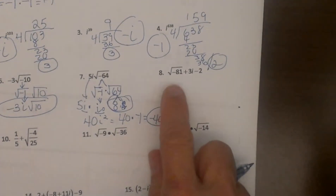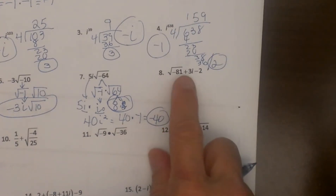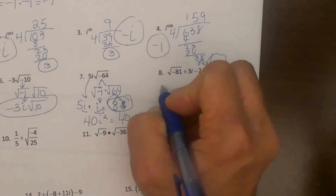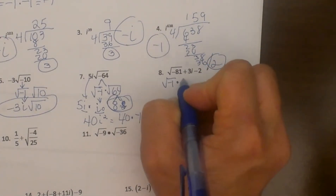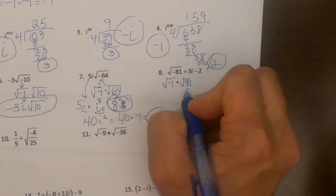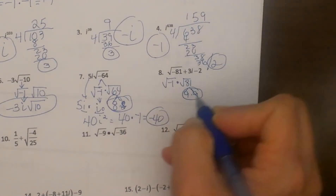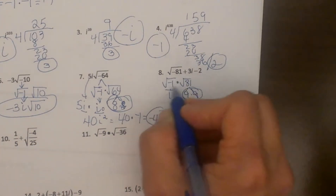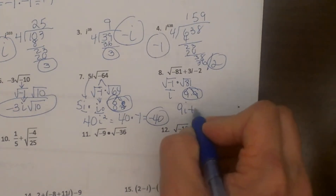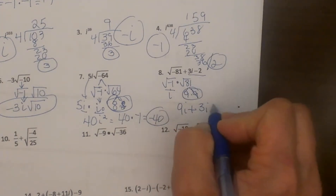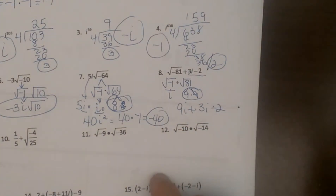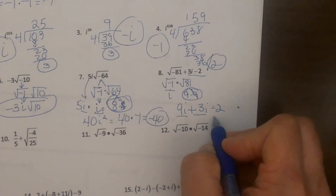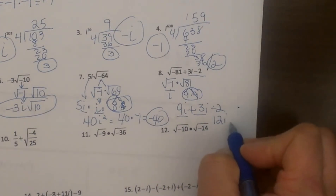Here is number 8. We have the square root of negative 81 plus 3i minus 2. We need to simplify this first. So let's break this down to the square root of negative 1 times the square root of 81. We know 81 is a perfect square because it breaks down to a 9, so this is going to become 9i. So when you have the square root of negative 1 it just becomes i, and then I am going to bring down the back half: 3i minus 2. Now I can add my like terms — I have 9i and a positive 3i — so that is going to become 12i minus 2.